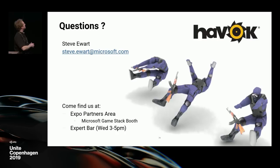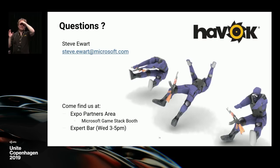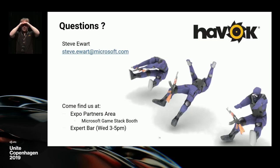I'll hang around for questions after this. We're at the Expo Partners area in the Microsoft GameStack booth, and I'll be at the expert bar tomorrow as well. [Question: What about soft bodies?] We're entirely focused on rigid body simulation within these packages at the moment. That said, things like the soft contact modifier would let you introduce a soft body type response in the collision, but it's really something you would have to put into your own game.